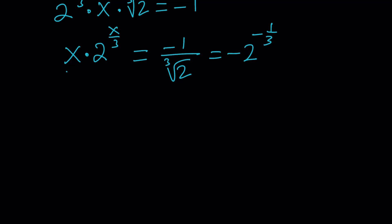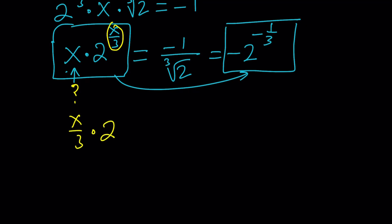Our goal is to get the same thing for the exponent as well. Since we have an x over 3, we should also have an x over 3 here. How do we get an x over 3? We can multiply both sides by 1 third. Let's do that: multiply by 1 third on both sides.